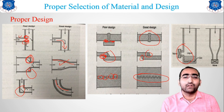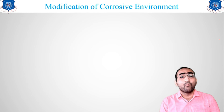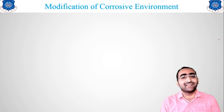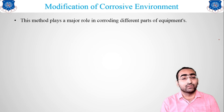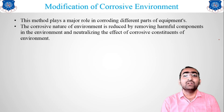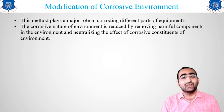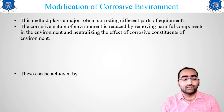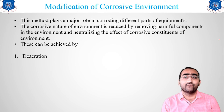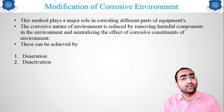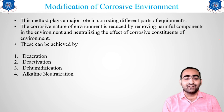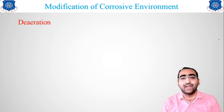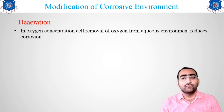The second method for corrosion prevention is modification of the environment. This method plays a major role by changing the corrosive environment where work is being done. There are four sub-methods: de-aeration, deactivation, dehumidification, and alkaline neutralization.